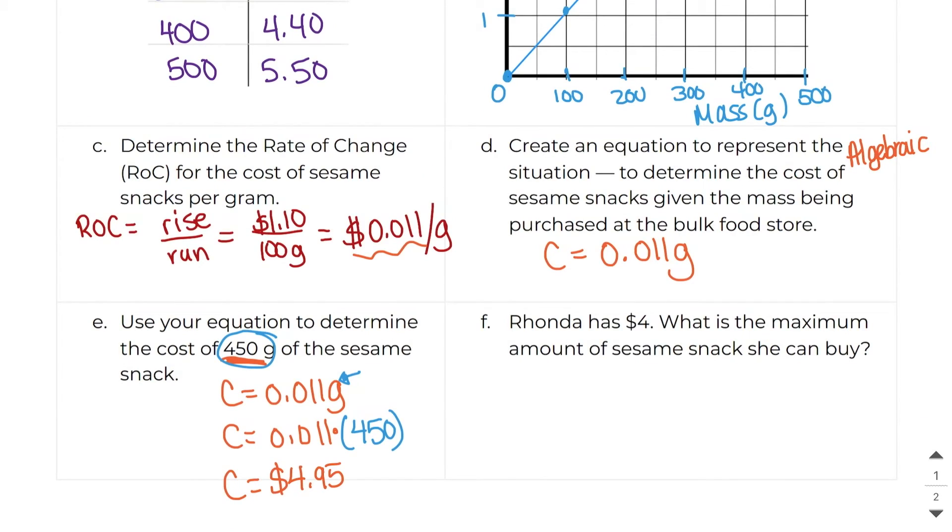And then lastly, it says Rhonda has $4. What is the maximum amount of sesame snack that she can buy? So we're going to use our equation again. And we know that she has $4. And that's the cost. So this time, I'm going to put the 4 in for the C. So I'm going to say 4. And then I'm going to copy the rest of this equation down. So 4 equals 0.011g.